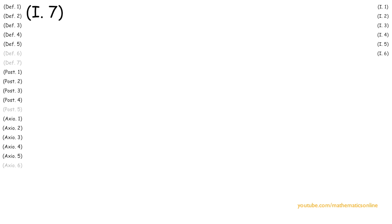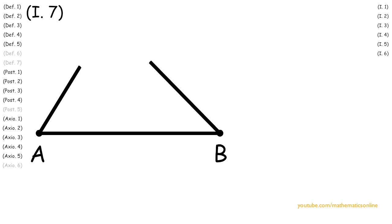So to begin we are given line AB with two lines drawn meeting at point C. Now the way Euclid proves this proposition is we assume that it is possible to have a second set of congruent lines meeting at a different point.